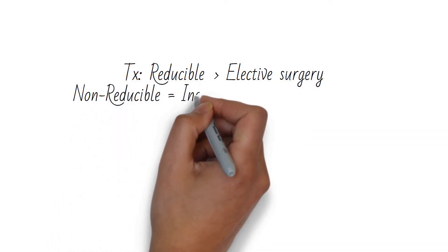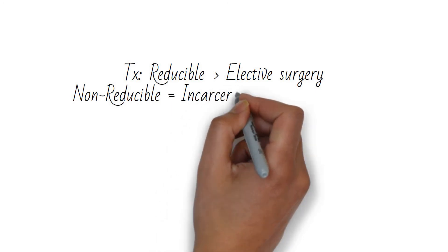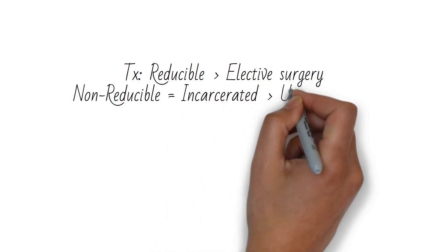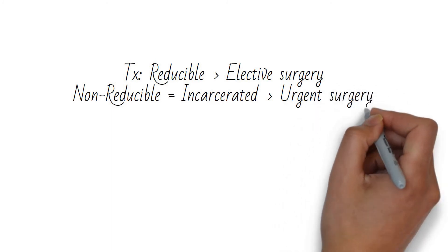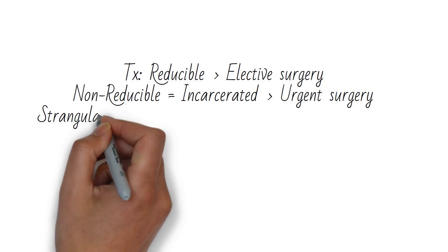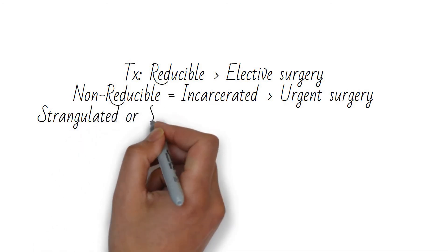If the hernia becomes strangulated, meaning ischemic, with sudden pain, peritoneal signs, fever, leukocytosis, or erythema and warmth of the hernia, or if a small bowel obstruction occurs, meaning the patient develops nausea, vomiting, and abdominal distention, the patient should go to surgery emergently.